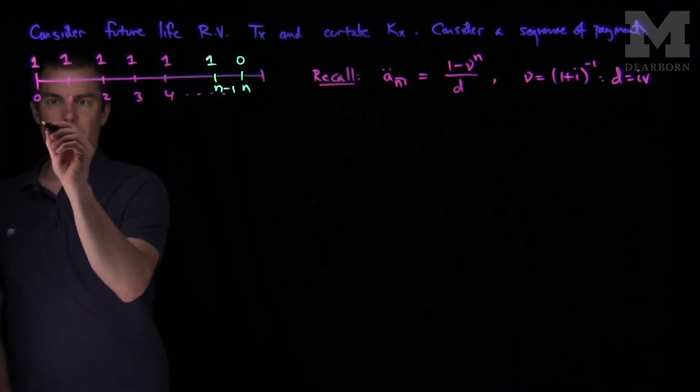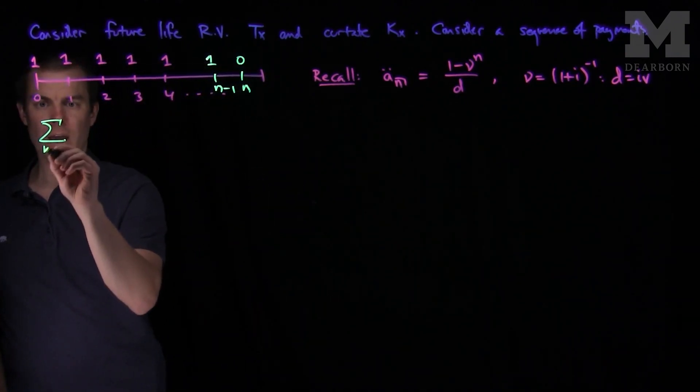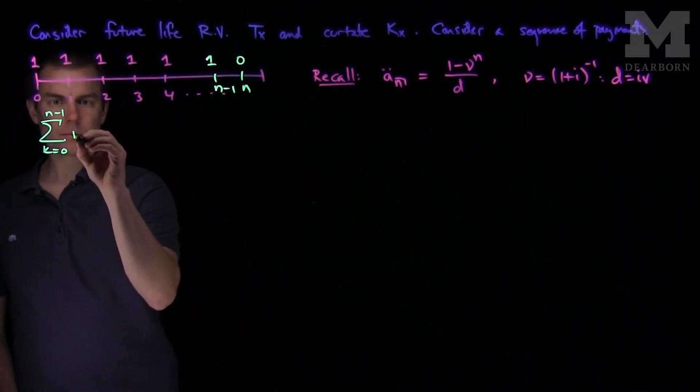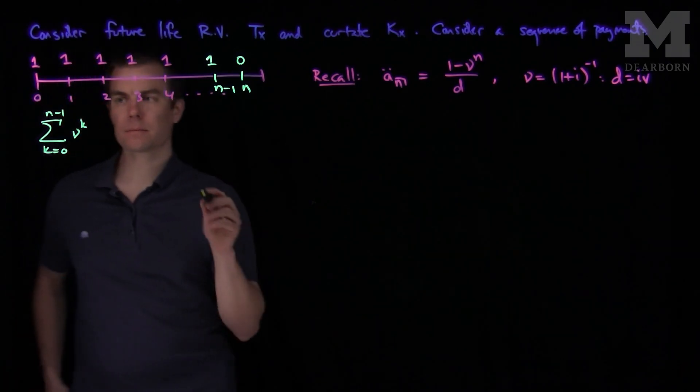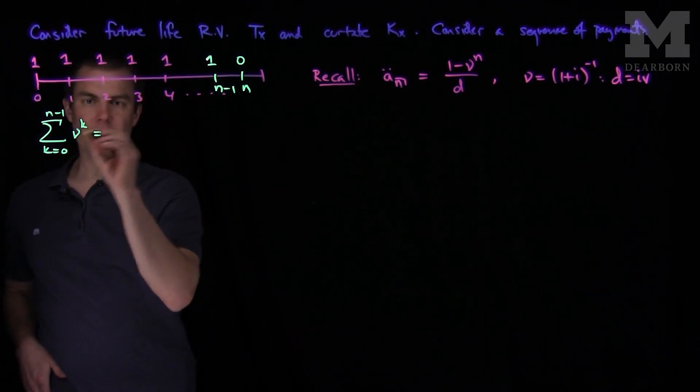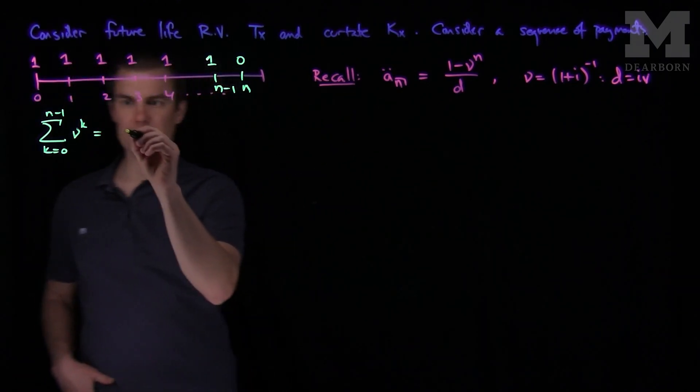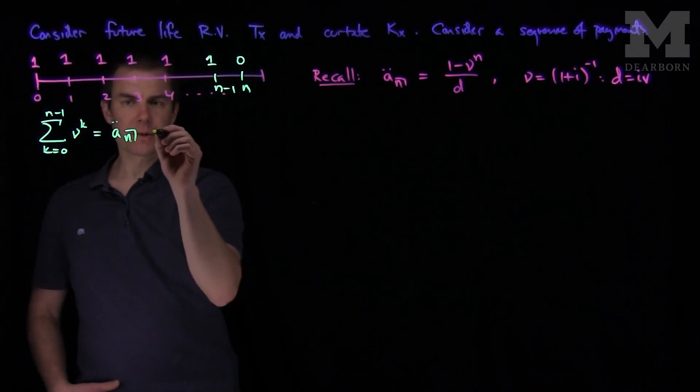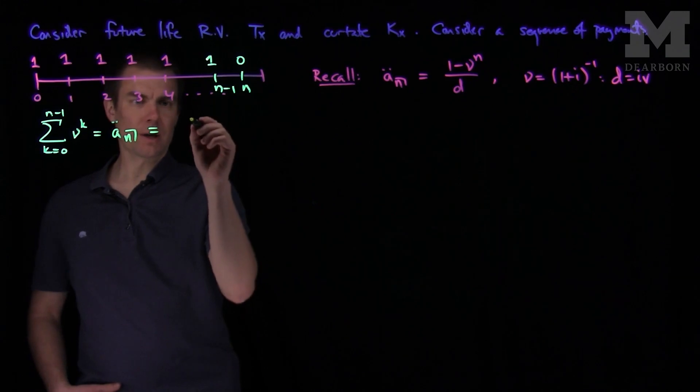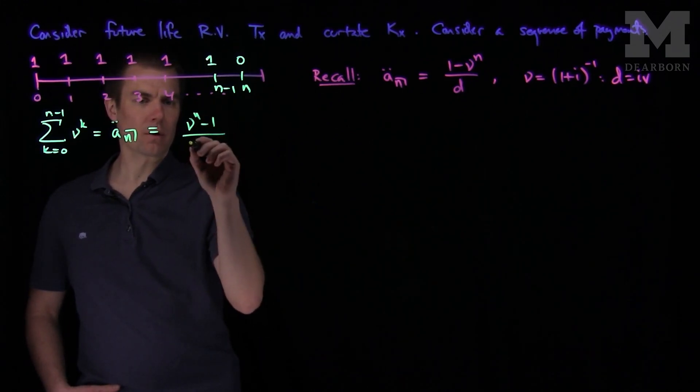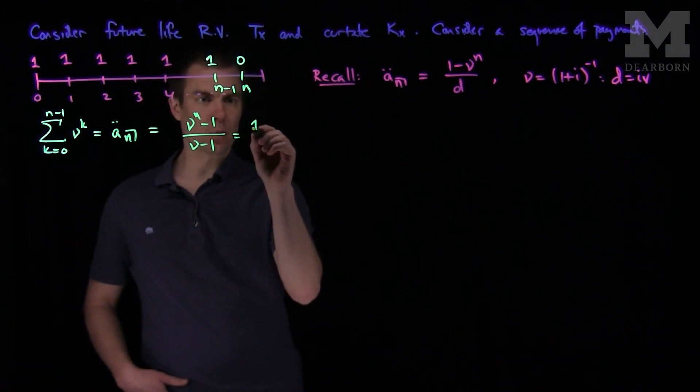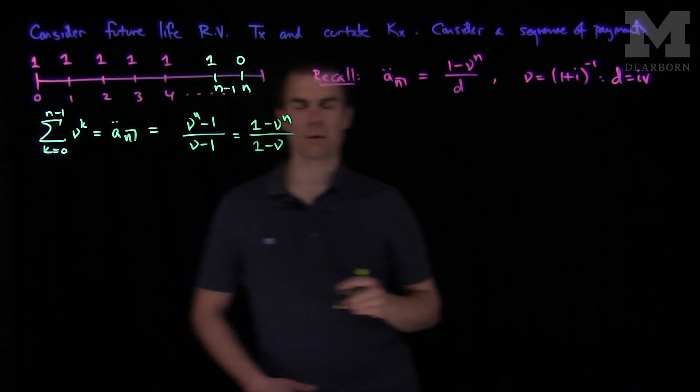Well this would just be the sum, K goes from 0 to n minus 1 of nu to the k. And then if we expand this out, this will just be our a double dot n. And what this is, is this will be nu to the n minus 1 over nu minus 1. And we can write this as 1 minus nu to the n over 1 minus nu by our geometric sum formula.